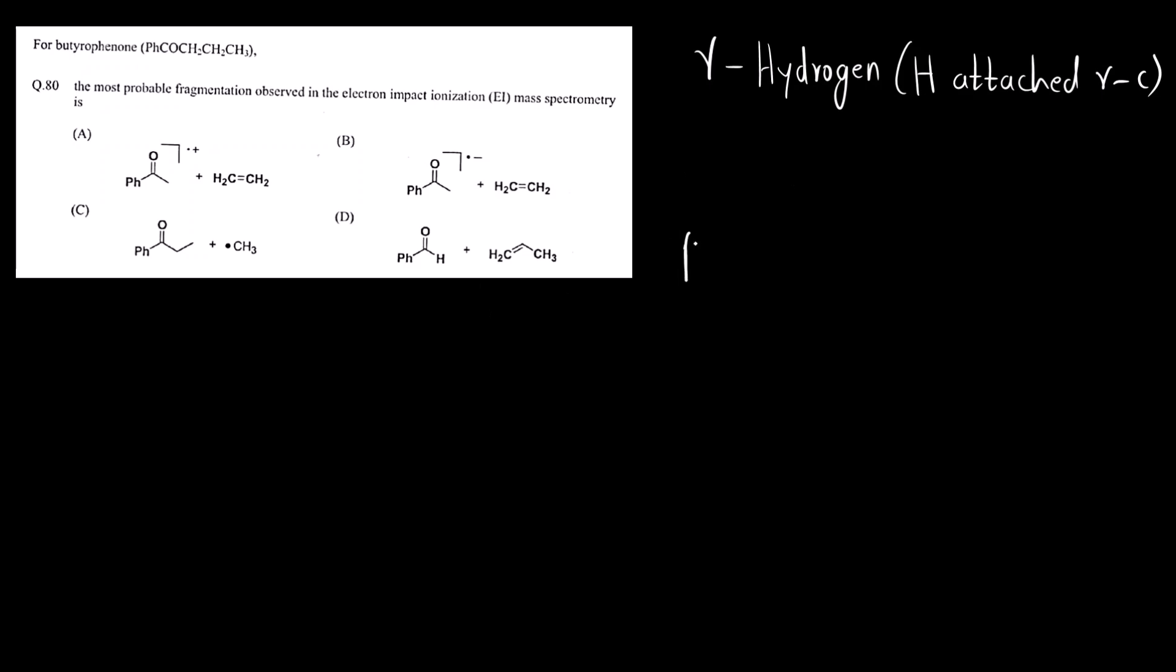Let us first draw the structure: Ph-C double bond O, CH2, CH2, CH3. Now initially oxygen had two lone pairs.